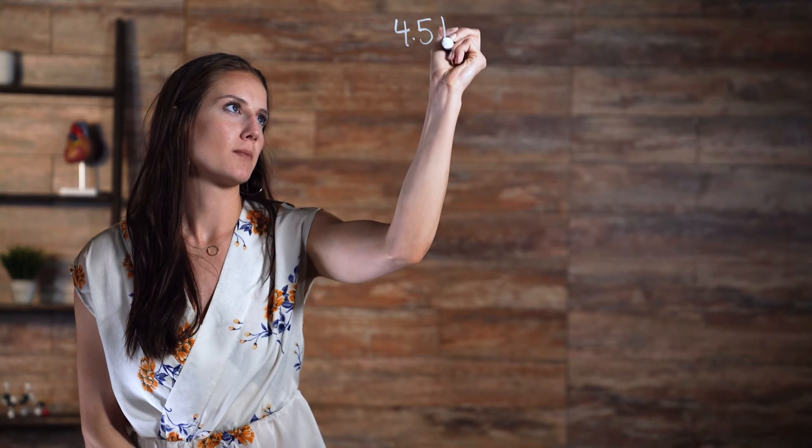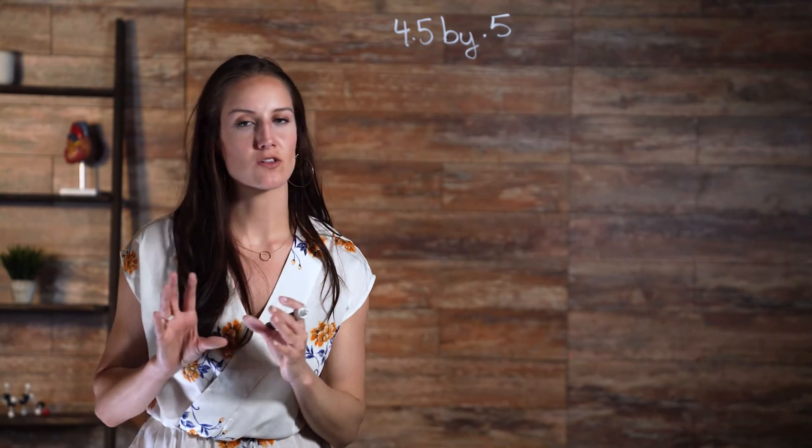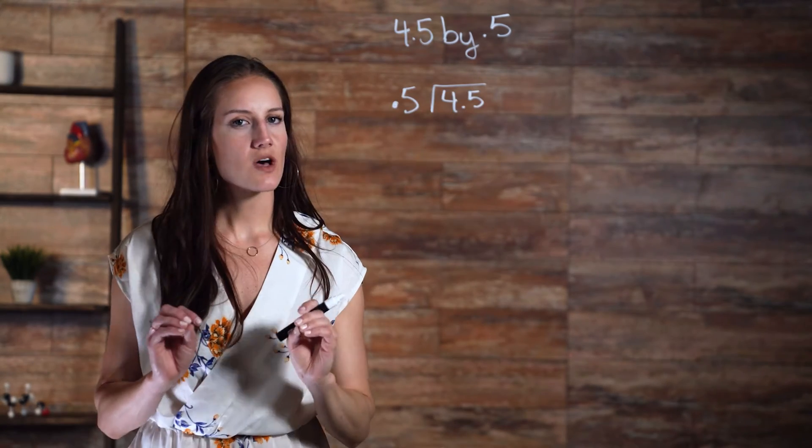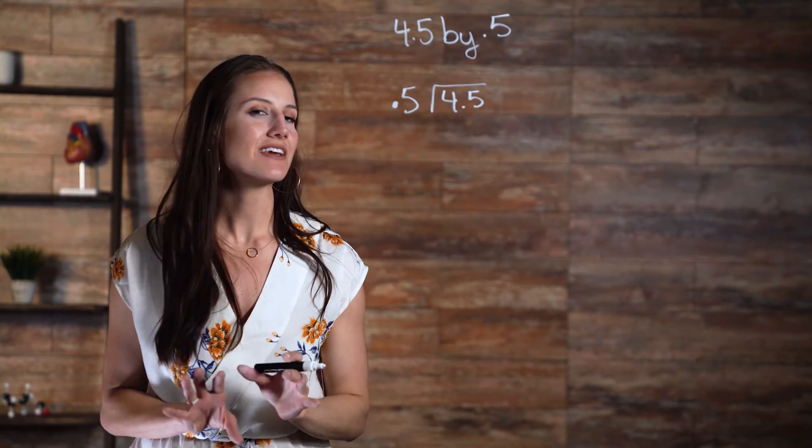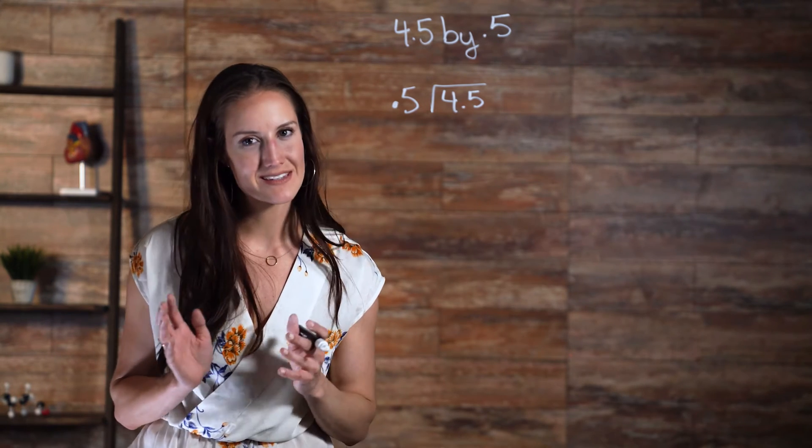Let's start with a basic example. Say you wanted to divide 4.5 by 0.5. Your first step would be to write out the problem as you would any other long division problem. It should look like this. When solving this problem, it would be significantly easier to work with whole numbers instead of numbers with decimals.